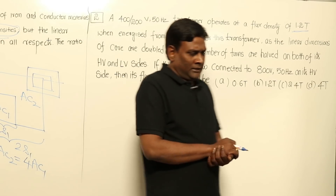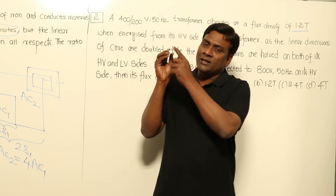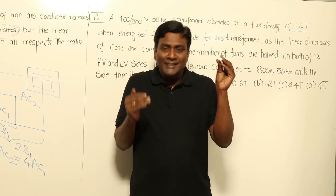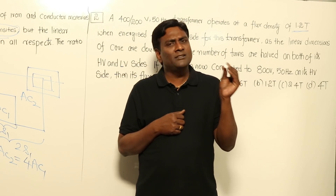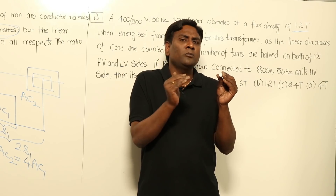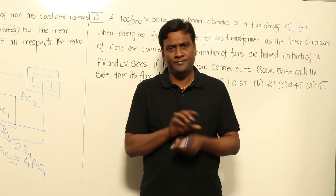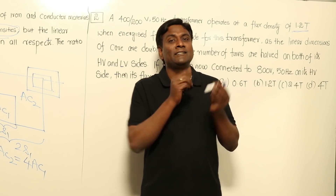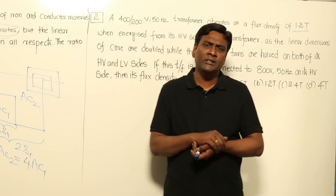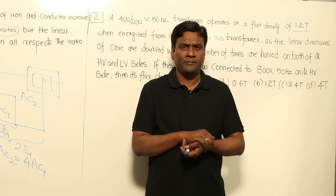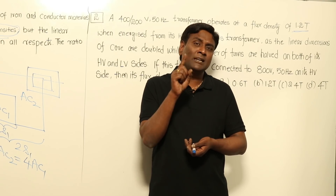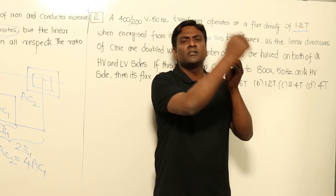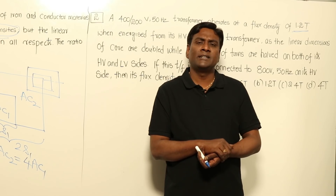Let me explain why current density is a constant. If a copper wire can carry 10 amperes, injecting 100 amperes will burn the wire. For copper, roughly 3 amperes per mm² is the standard current density. So if you want to inject 3 amperes, 1 mm² area is required. If you want to inject 30 amperes, the area of cross section of copper must be increased to 10 mm².